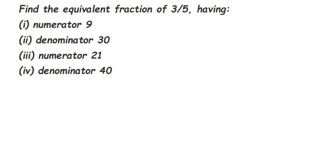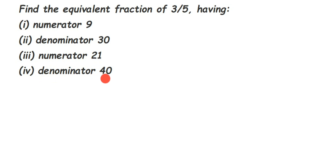Hey everyone, here's a question on fractions. The question is: find the equivalent fraction of 3/5 having numerator 9, denominator 30, numerator 21, and the last one denominator 40. So they have given the fraction 3/5 and we have to find an equivalent fraction for each condition.